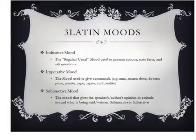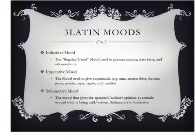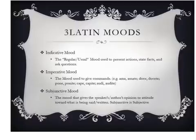Remember, in Latin, verbs can be broken down to six different categories based on their conjugation: first, second, third, third io, or fourth. Person: first, second, third. Number: singular or plural. Tense: present, imperfect, future, perfect, past perfect, future perfect. Voice: active or passive. And mood.